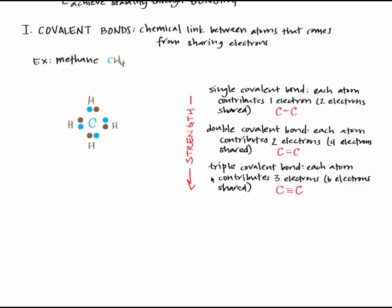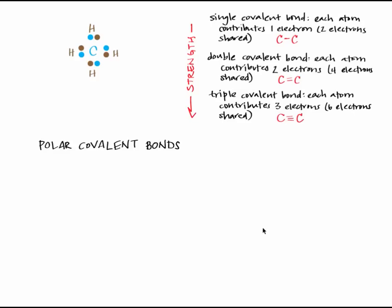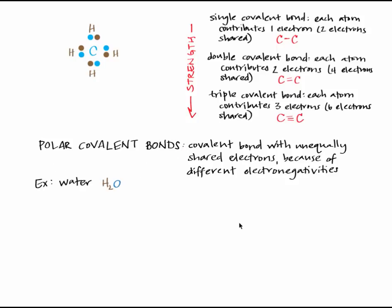There's a subcategory of covalent bonds called polar covalent bonds. This is a type of covalent bond where the electrons are shared unequally between the atoms, because one atom attracts electrons more than the other. Think back to the last tutorial — the term for how much an atom attracts electrons is electronegativity. When the two atoms involved in a covalent bond have slightly different electronegativities, the result is a polar covalent bond. A very common example of a molecule with polar covalent bonds is water, which is made up of an oxygen atom covalently bonded to two hydrogen atoms.